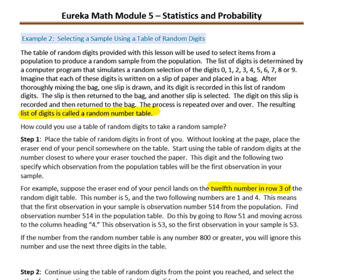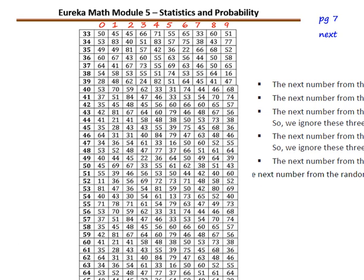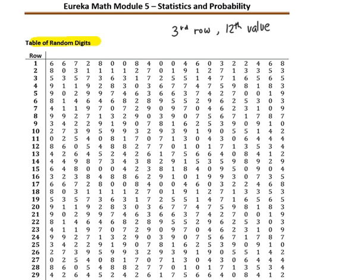Place the table of random digits in front of you. Without looking at the page, place the eraser end of your pencil somewhere on the table. Start using the table of random digits at the number closest to where your eraser touches the paper. This digit and the following two specify which observation from the population table will be the first observation in your sample. For example, suppose the eraser lands on the twelfth number in row 3 of the random digit table. Counting to the twelfth value gives us the digits 5, 1, 4 — so 514 is our random number.